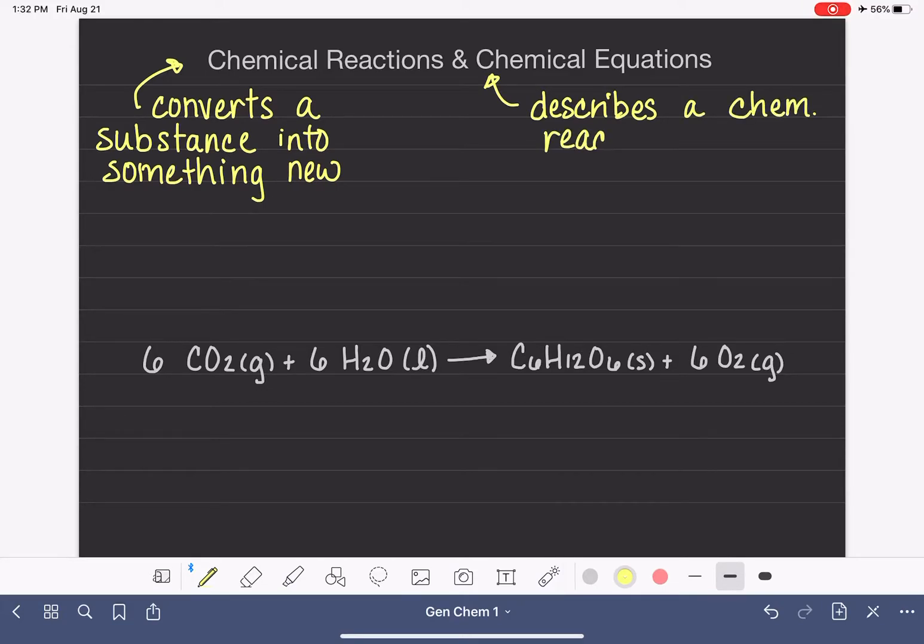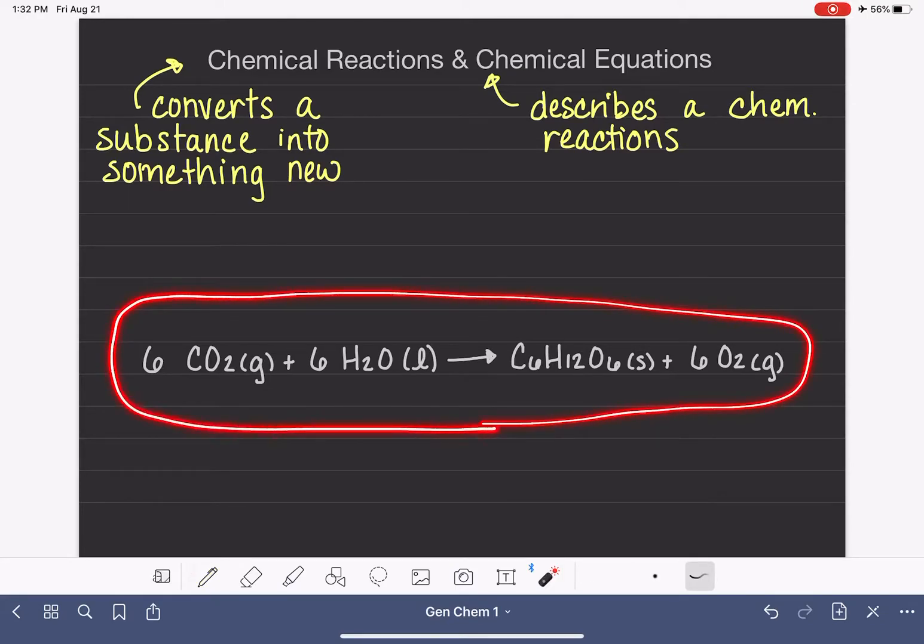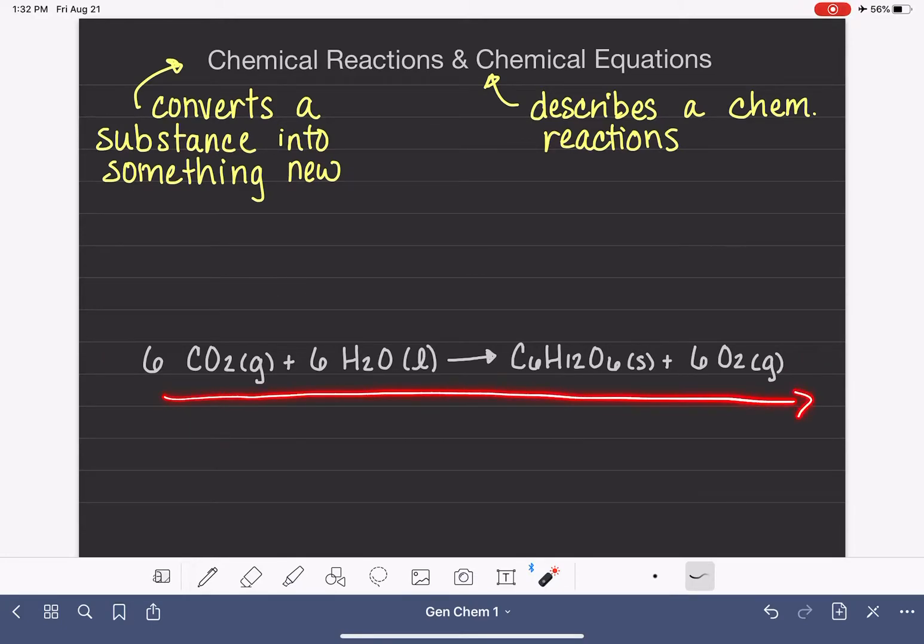Chemists view chemical equations like recipes. They are instructions on how to carry out a chemical reaction. This is an example of a chemical equation, a symbolic written description of a chemical reaction. This particular equation is the reaction known as photosynthesis, where plants convert carbon dioxide and water into glucose and oxygen gas.